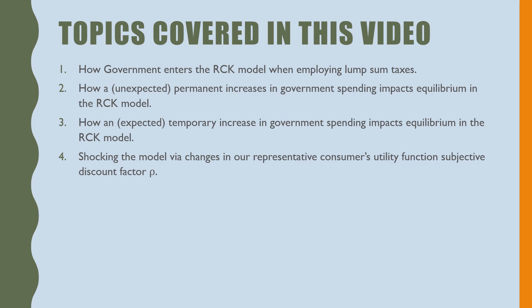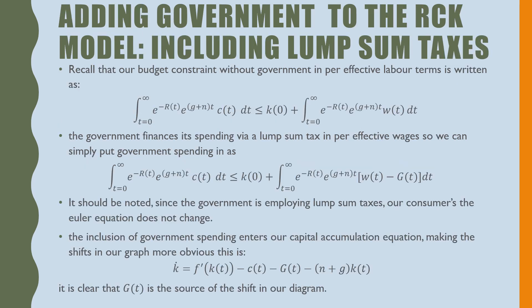Recall that the budget constraint without government per effective labor is written as follows. The government finances its spending via a lump-sum tax in per effective wages, so we can simply put government spending in this model by placing g where our wages per effective labor was and subtracting that from there.